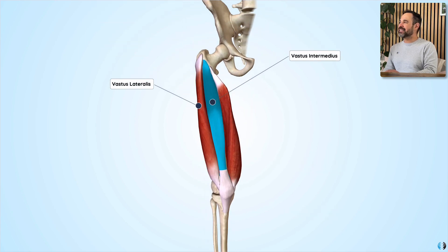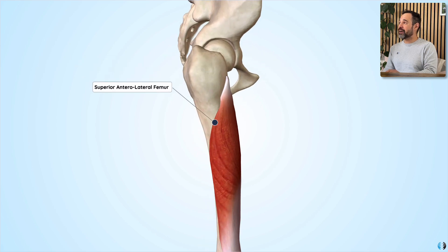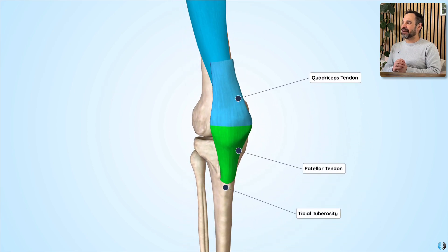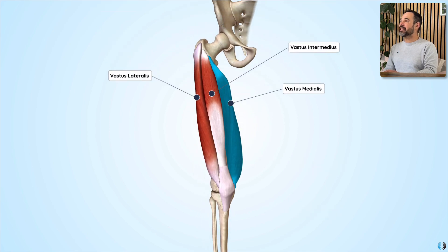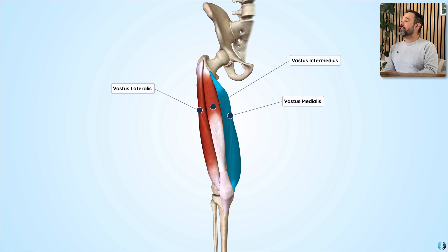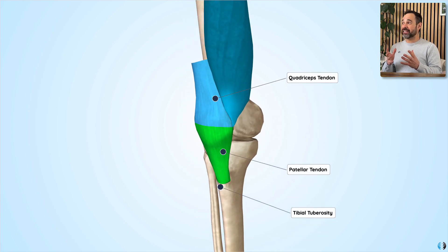We then have vastus intermedius in the middle. This muscle originates also from the superior half of the anterior and lateral surfaces of the femur before, like the others, joining into the quadriceps tendon and thus the tibial tuberosity. Vastus medialis, as you can imagine, is on the more medial side of the knee. The origin of this muscle is from the more anterior and medial surfaces of the femur before also joining into the quadriceps tendon and the tibial tuberosity.